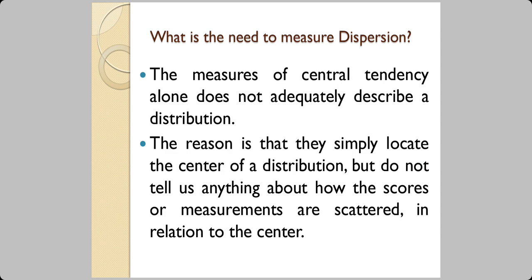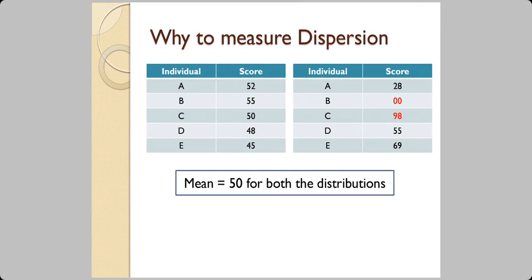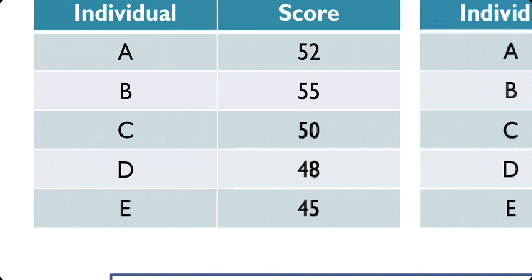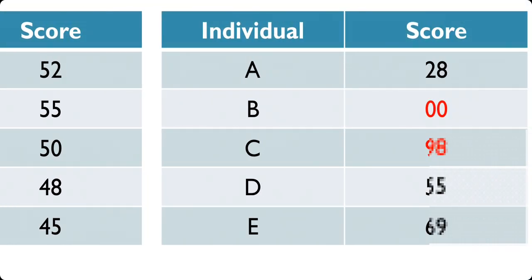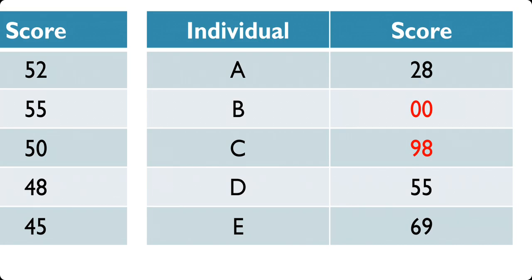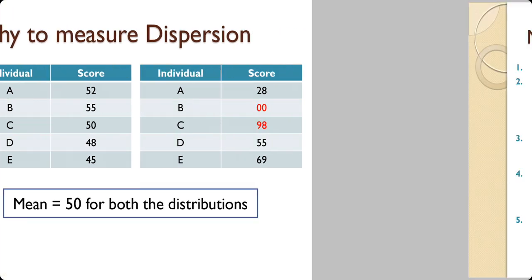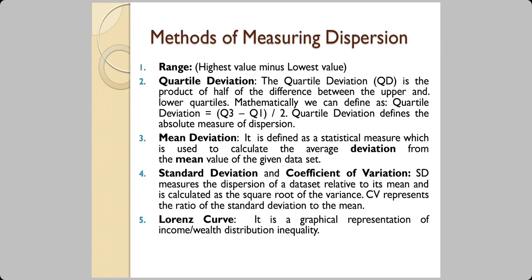In reality, central tendency alone is not adequate to describe a distribution. Knowing the center does not tell us how the scores are scattered around it. For example, two datasets can both have a mean of 50 — one with values clustered close to 50, the other with extreme values like 0 and 98 — yet both yield the same mathematical mean.